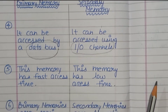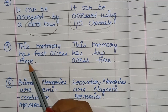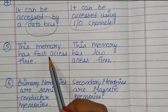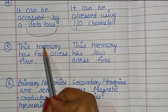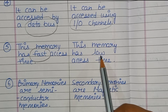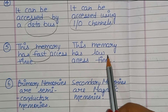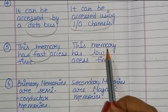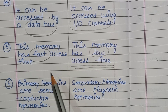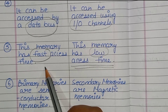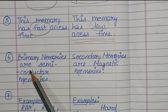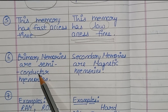The next difference is primary memory has fast access time, while secondary memory has low access time.